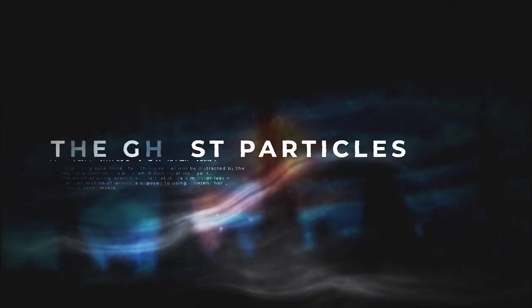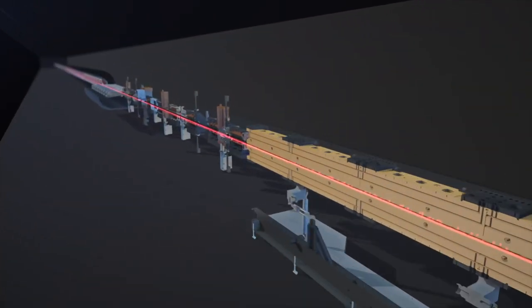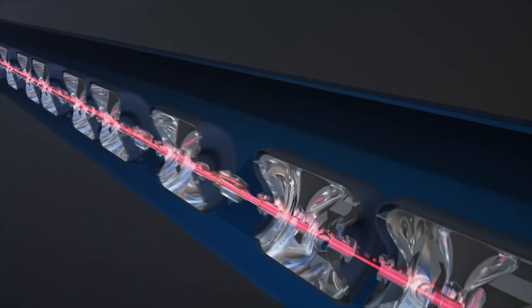The ghost particles. Nicknamed ghost particles, neutrinos are tiny little particles that eluded detection until 2021, when one was finally seen at the LHC.